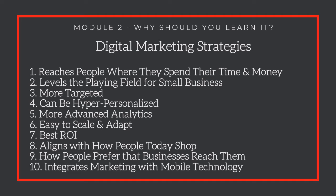Number nine: it reflects how people prefer that businesses reach them. If you don't like something, you don't search for it. Social media advertising gives you options — if you don't like an ad, you can ignore it and move on to things you are interested in buying. The tenth and last reason is that digital marketing integrates marketing with mobile technology.